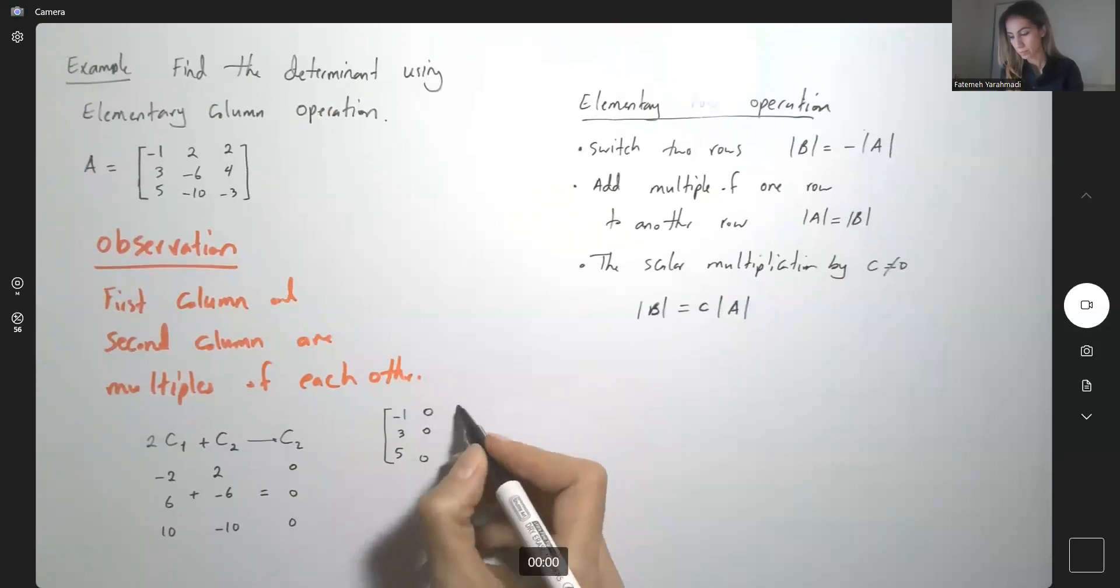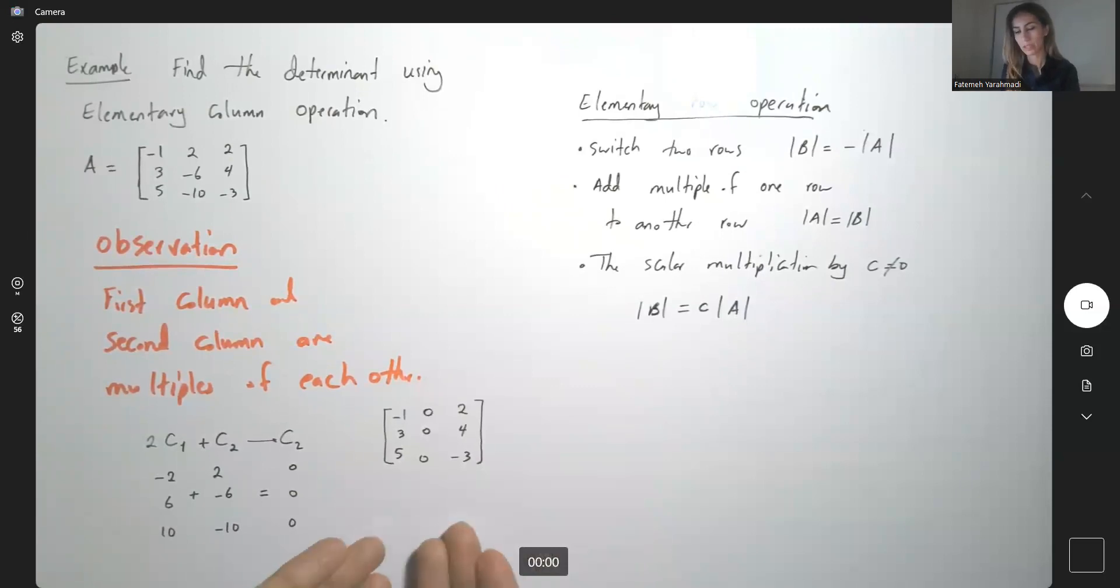But the last column stays the same. 2, 4, negative 3. Well, so what's next? This is my new matrix.